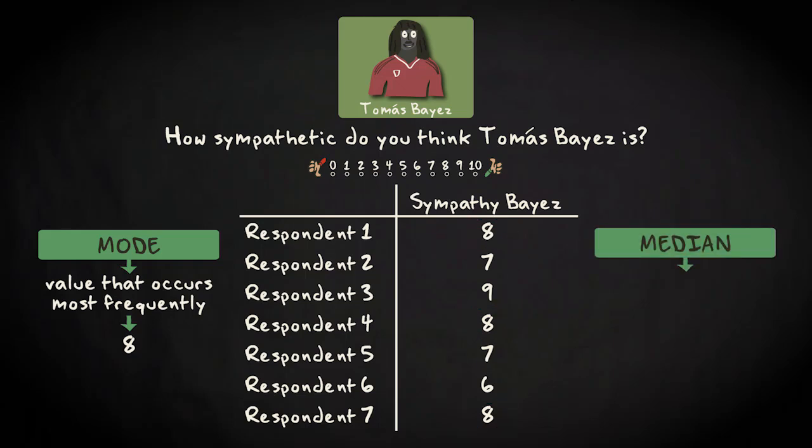To compute the median, we first have to order all values from low to high. This is the result. Then we have to pick the middle value. So, the median is 8.